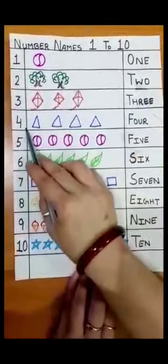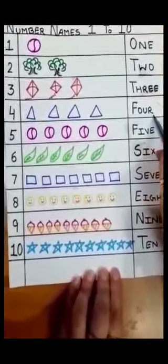Next, four. Four is numeral. Four triangles. The number name is F-O-U-R-E, four.